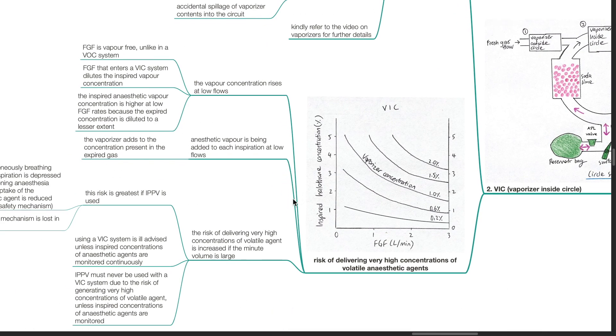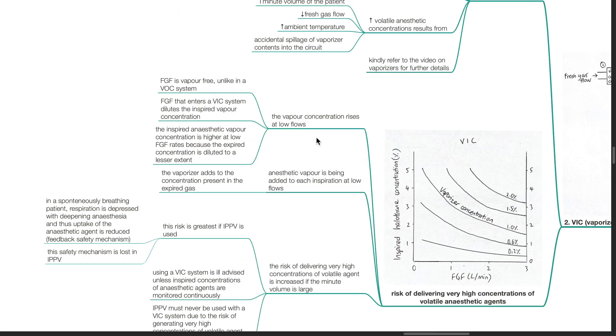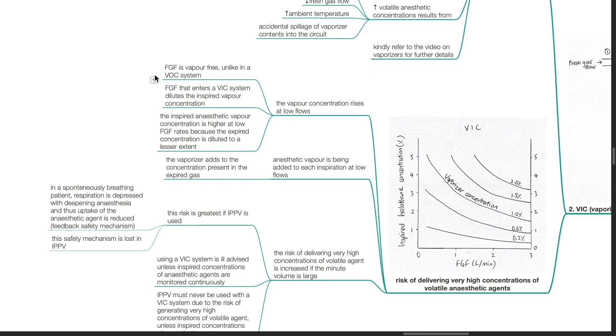There is a risk of delivering very high concentrations of volatile anesthetic agents with the use of VIC; the vapor concentration rises at low flows. Fresh gas flow is vapor-free, unlike in the VOC system. Fresh gas flow that enters a VIC system dilutes the inspired vapor concentration. The inspired anesthetic vapor concentration is higher at low fresh gas flow rates because the expired concentration is diluted to a lesser extent. Anesthetic vapor is being added to each inspiration at low flows, as the vaporizer adds to the concentration present in the expired gas. The risk of delivering very high concentrations of volatile agent is increased if the minute volume is large. This risk is greatest if IPPV is used. In a spontaneously breathing patient, respiration is depressed with deepening anesthesia, thus reducing uptake of the anesthetic agent — this acts as a feedback safety mechanism.